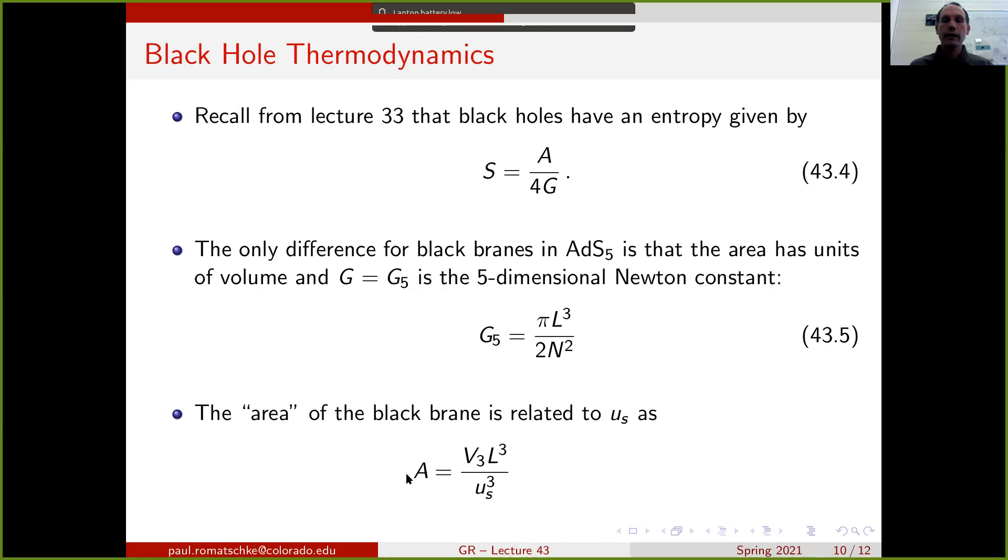And if we have this five-dimensional Newton's constant, we can plug it into the formula for the entropy here. The only thing we still need is the area of the black brane, and that is just the area of this black plane horizon, so it is proportional to the volume of the three-dimensional space times the location of the black brane us. Since we know us in terms of the Hawking temperature, we know the area in terms of the temperature of the black brane, and if you plug all of these in, we get the entropy for the black brane.